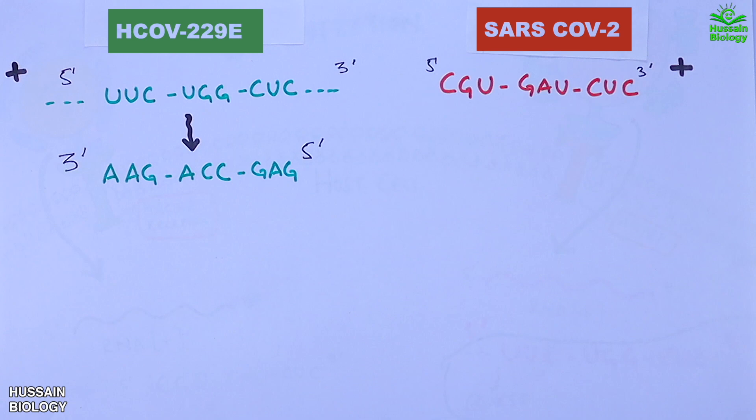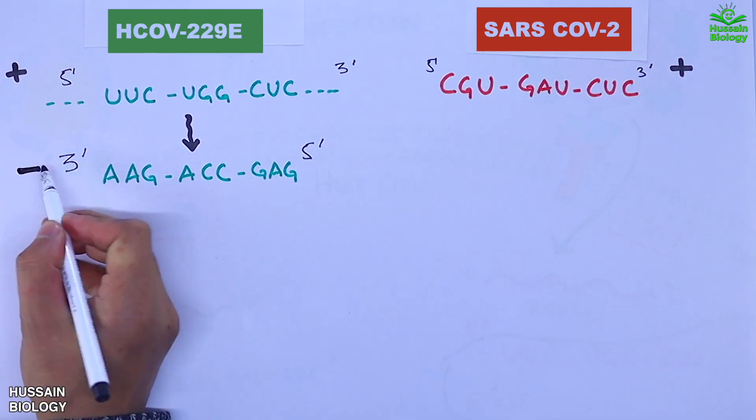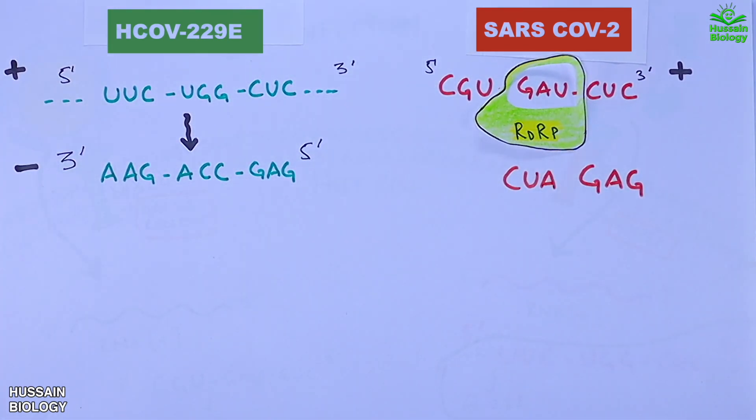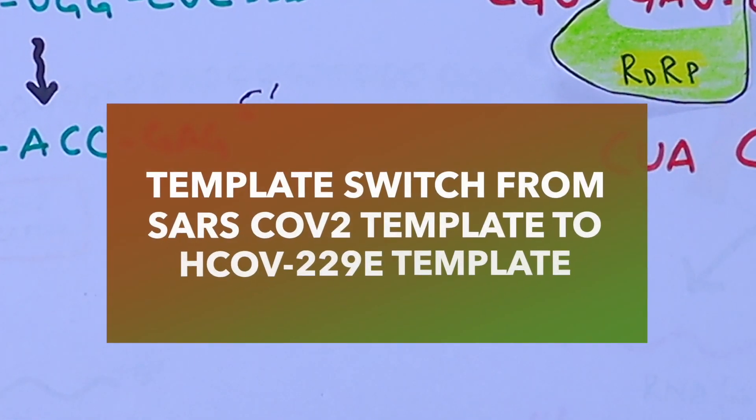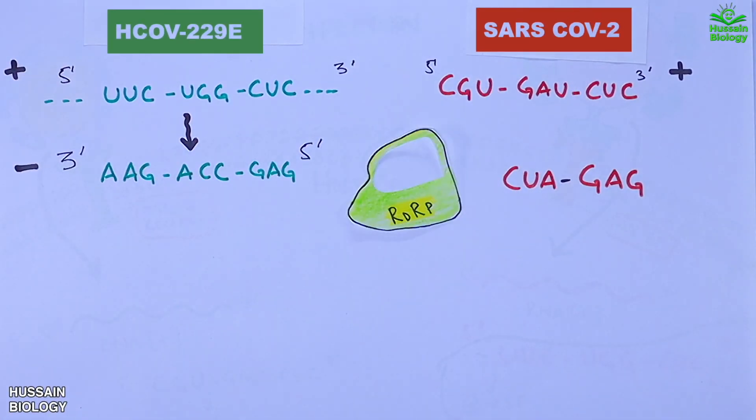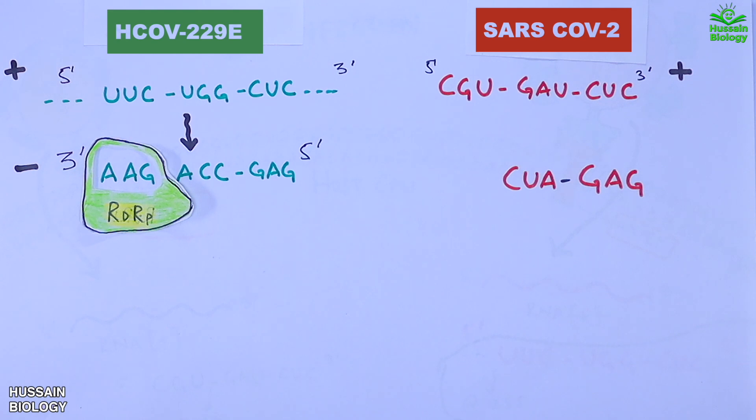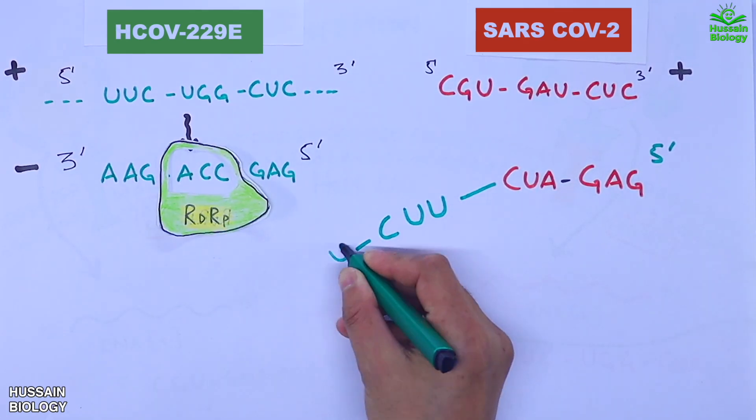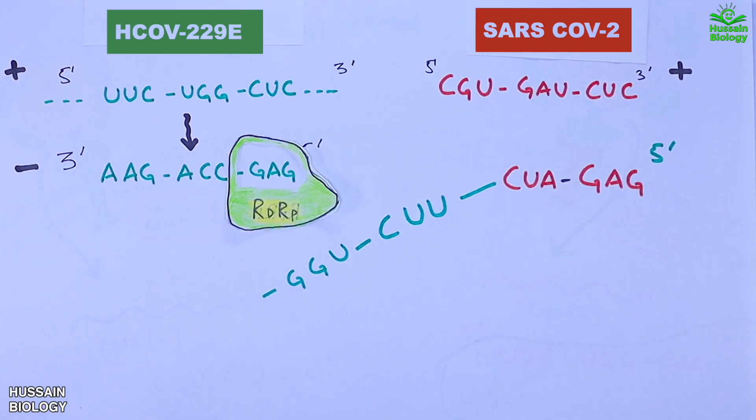Now on the right when we act on SARS-CoV-2 RNA, the RNA polymerase comes in and moves into first codon and we get GAG. Then on next codon we get CAU. But from here the template switch occurs. As we see, the RNA polymerase jumps to the 229E RNA template at 3' end and starts making strand. So AAG gives us UUC, ACC gives us UGG and GAG gives us CUC.